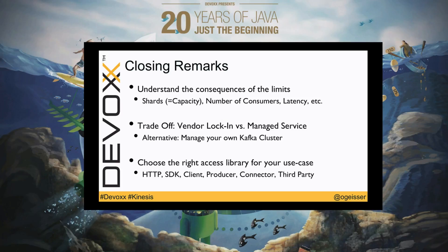Some closing remarks. If you want to use Kinesis Streams, understand the consequences of the limits. The shard is a unit of capacity, meaning there are dependencies between the number of shards, the number of consumers, and the latency for every consumer — you need to calculate and balance depending on your use case. Also decide if Kinesis is the right tool for you. You have a trade-off: there is vendor lock-in because this is a proprietary cloud service. But it's completely managed. An alternative would be to host and operate your own Kafka cluster, but if you have done this in production, it's a lot of work. So Kinesis is an easy, scalable, 24/7, always-on service — but keep the vendor lock-in in the back of your mind.